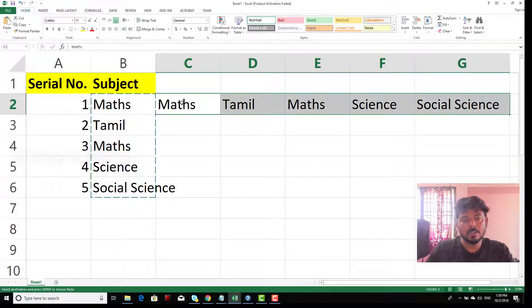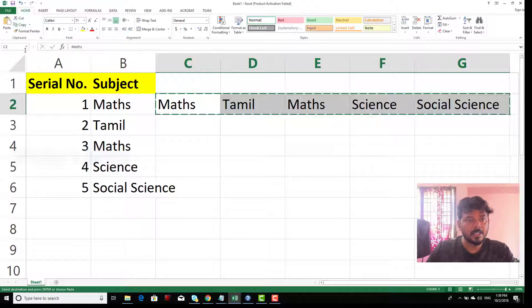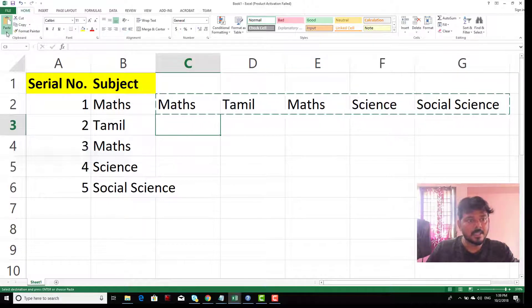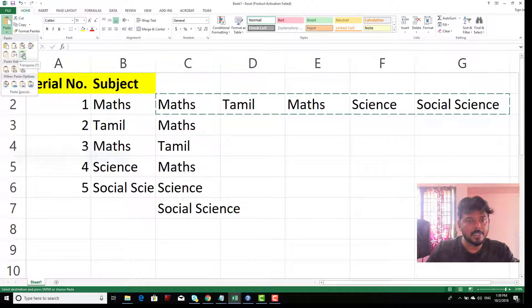If you want to copy this, copy the horizontal to vertical, you can do that. Again copy, and select the place and click paste and here transpose. See this.